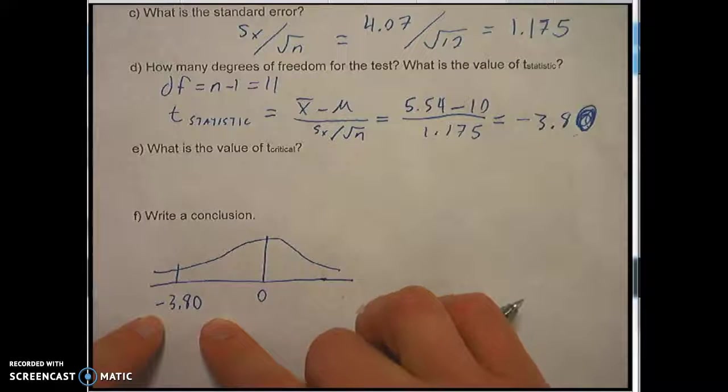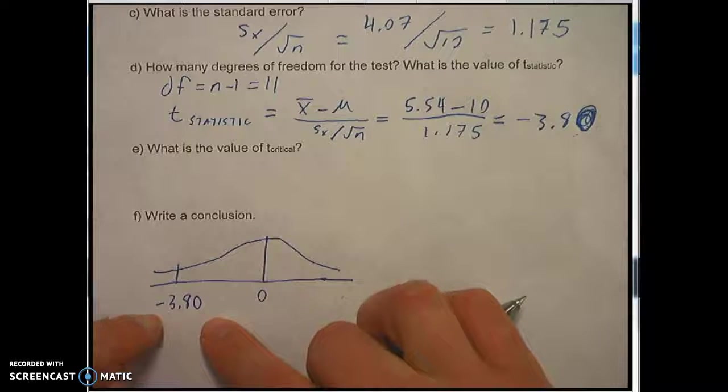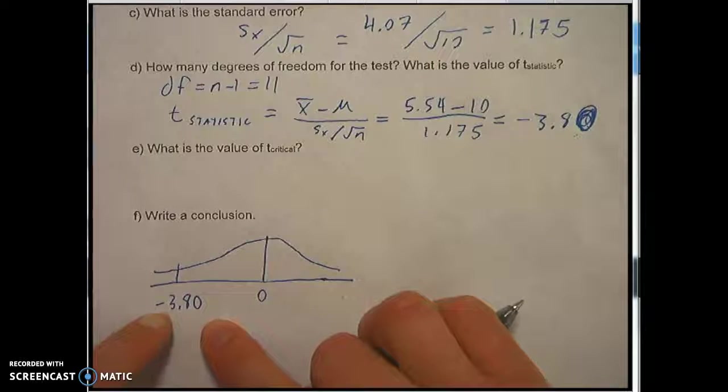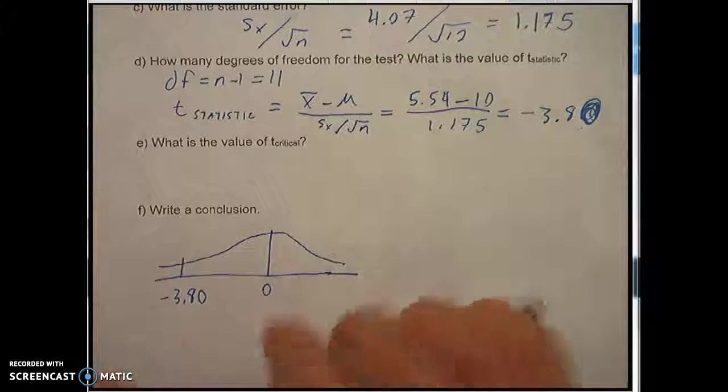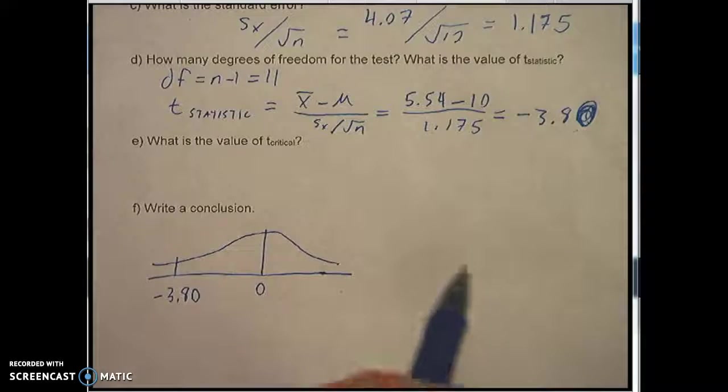If it is then we know that the p value is less than the significance level of 5% and we would reject the null hypothesis. If it is not in the critical value then we know that the p value is greater than 0.05 and we would fail to reject. So what's the critical value?